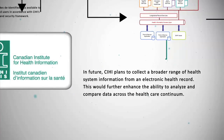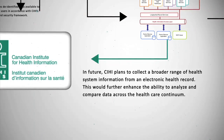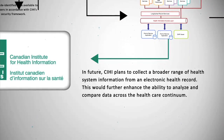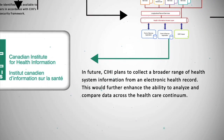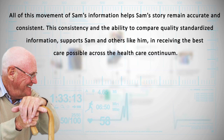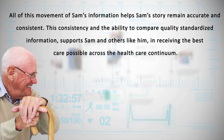In future, CIHI plans to collect a broader range of health system information from an electronic health record. This would further enhance the ability to analyze and compare data across the health care continuum. All of this movement of Sam's information helps Sam's story remain accurate and consistent. This consistency and the ability to compare quality standardized information supports Sam and others like him in receiving the best care possible across the health care continuum.